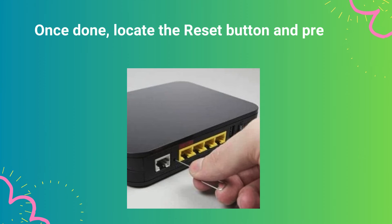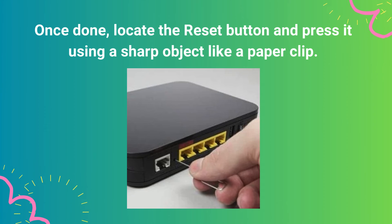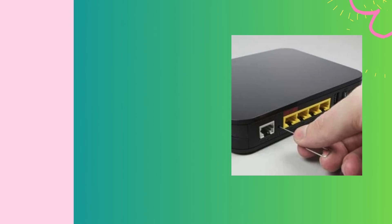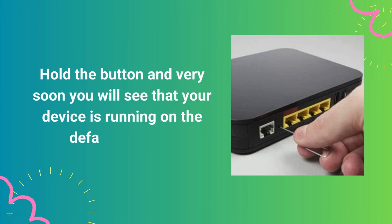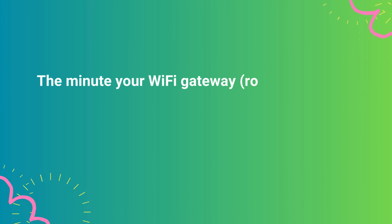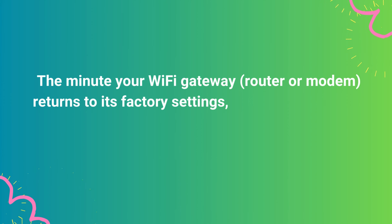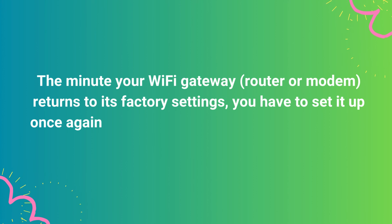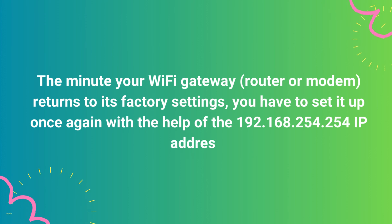Once done, locate the reset button and press it using a sharp object like a paper clip. Hold the button and very soon you will see that your device is running on the default settings. The minute your Wi-Fi gateway, router, or modem returns to its factory settings, you have to set it up once again with the help of the 192.168.254.254 IP address.